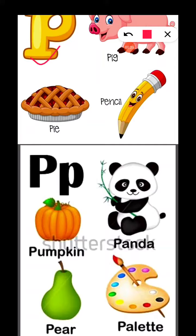This is letter P. P for pie, P for pencil, P for pumpkin, P for panda, P for pear, P for pellet.